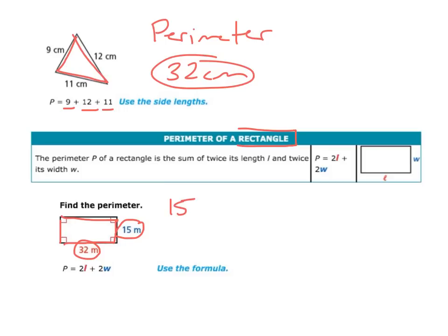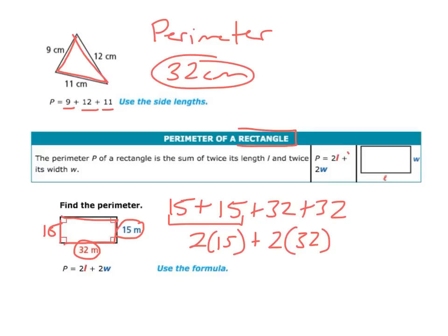So one way to do it would be to add up all the sides. So there's two 15's and there's two 32's. So instead of adding all this up, I could just do two times the length and add that to two times the width. So the formula for the perimeter of a rectangle is perimeter equals 2L plus 2W. So in this case, if I'm using the formula, two times 15 is 30, and two times 32 is 64. 30 plus 64 equals 94. So it would be 94 meters, because the units on this rectangle were meters.